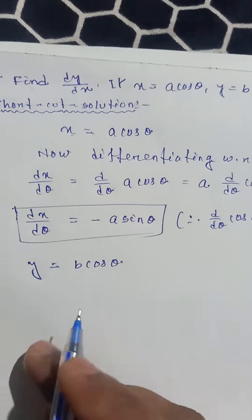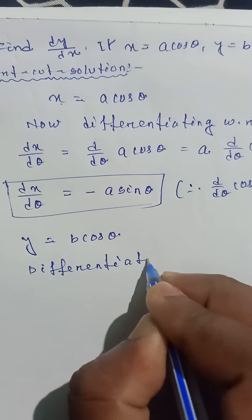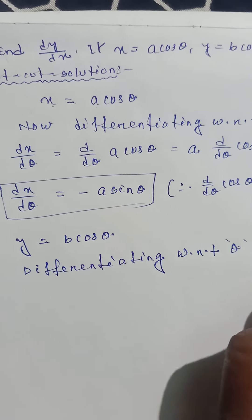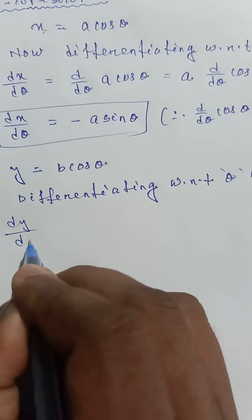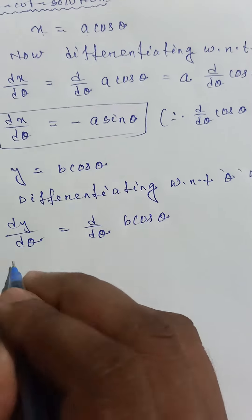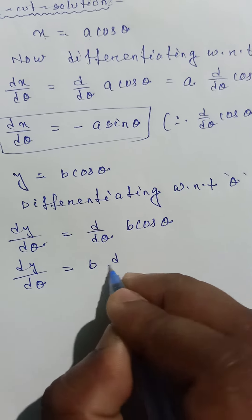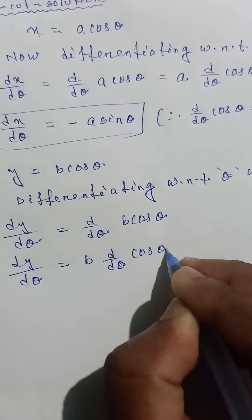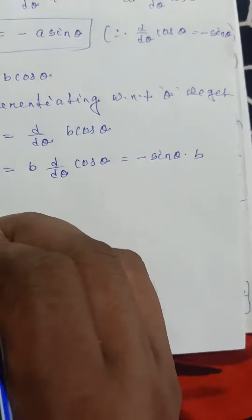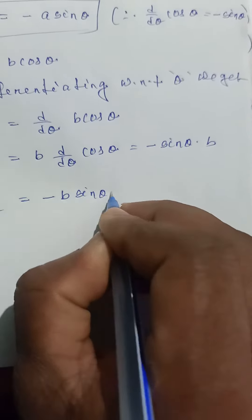Now y equals b cos theta. Differentiating with respect to theta, dy by d theta equals d by d theta of b cos theta, which equals b times d by d theta of cos theta. Since the derivative of cos theta is minus sin theta, dy by d theta equals minus b sin theta.